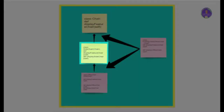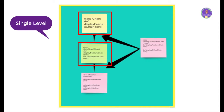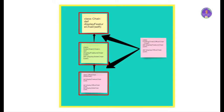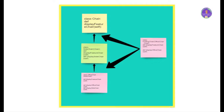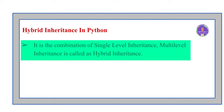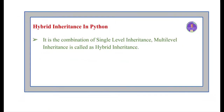In this diagram, chair is the base class. Class side chair is derived from chair class — this is an example of single level inheritance. Class office chair is derived from side chair class — this is an example of multilevel inheritance. One more class, folding chair, is derived from both office chair class and chair class. The definition of hybrid inheritance in Python is that it is the combination of single level inheritance and multilevel inheritance.